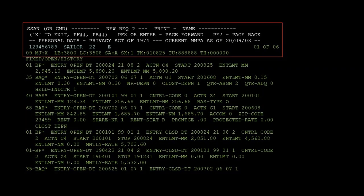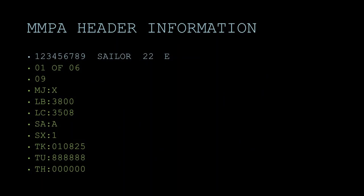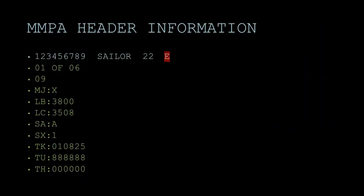Now let's go to the turquoise-colored portion of the MMPA header. The first block is the member's social. The second line is the member's name — the first five letters. The next line is the member's pay grade: 2-2 represents the pay grade, look that up. The 'E' represents what page we're looking at — we put 'entitlement' and it brought us here, which is one of the 14 categories and comes out numerically.